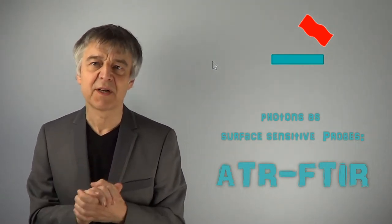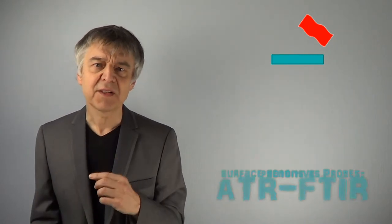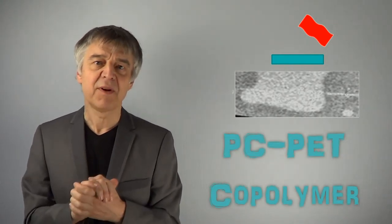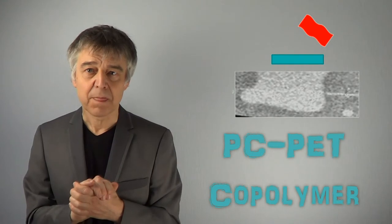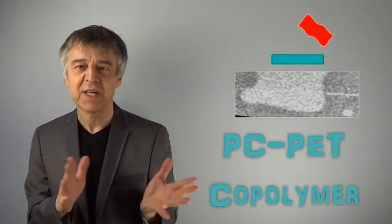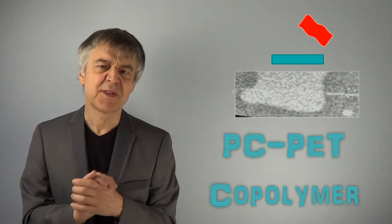Scanning spectroscopy is possible to provide chemical contrast images. Here you can see the electron micrograph of a copolymer of polycarbonate and polyethylene terephthalate. This picture does not permit any information about which phase is which, and in fact we only see a weak contrast.